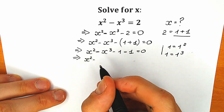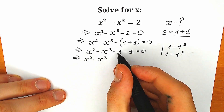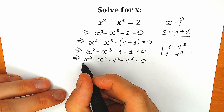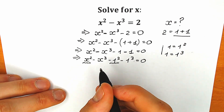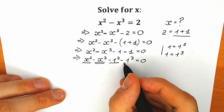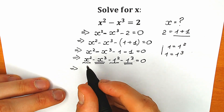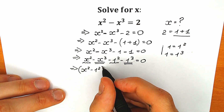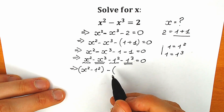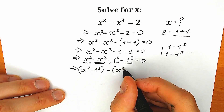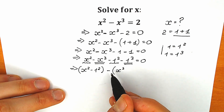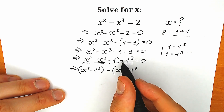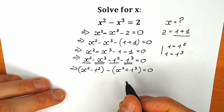So we have x squared minus x cubed minus 1 squared minus 1 cubed equals 0. We can now group the second-power terms together and the third-power terms together. Let's take (x squared minus 1 squared) in one parenthesis, and then minus (x cubed plus 1 cubed) — we write plus 1 cubed inside the parenthesis because when we open it with the negative sign we get the minus we need. Equal to 0.